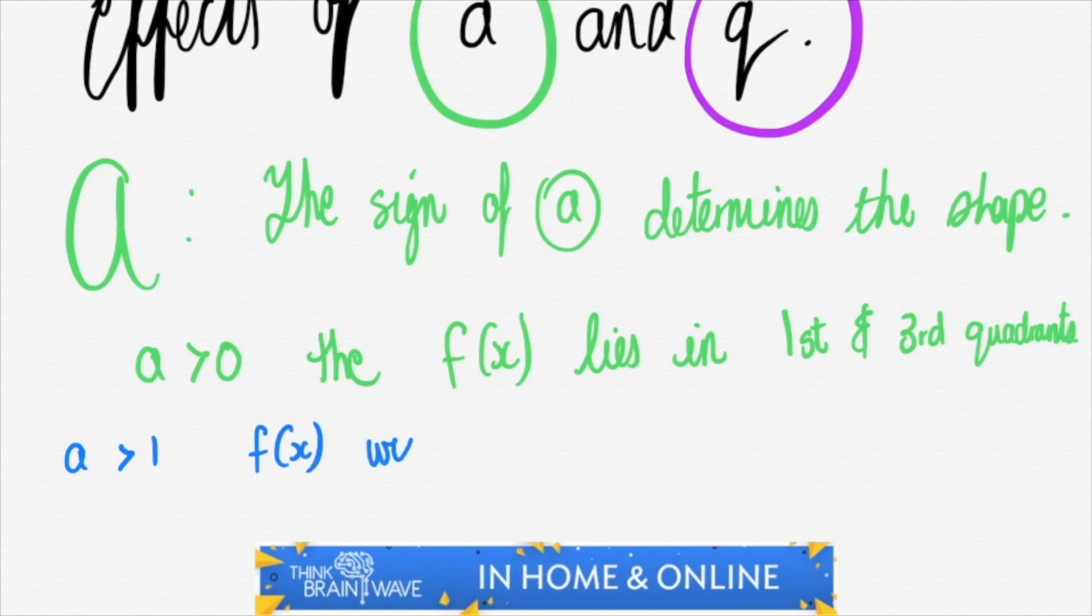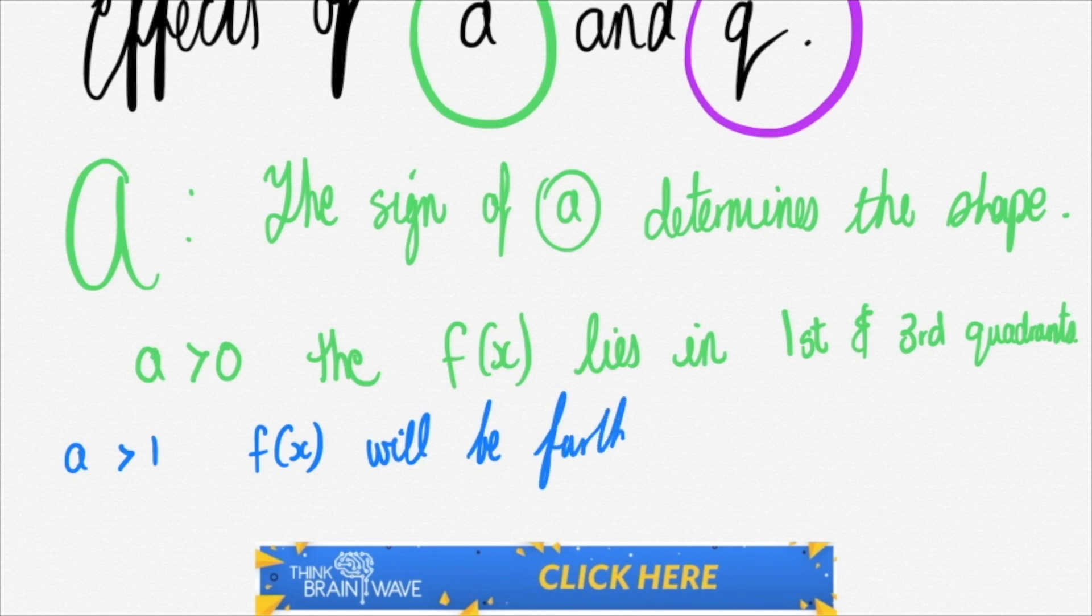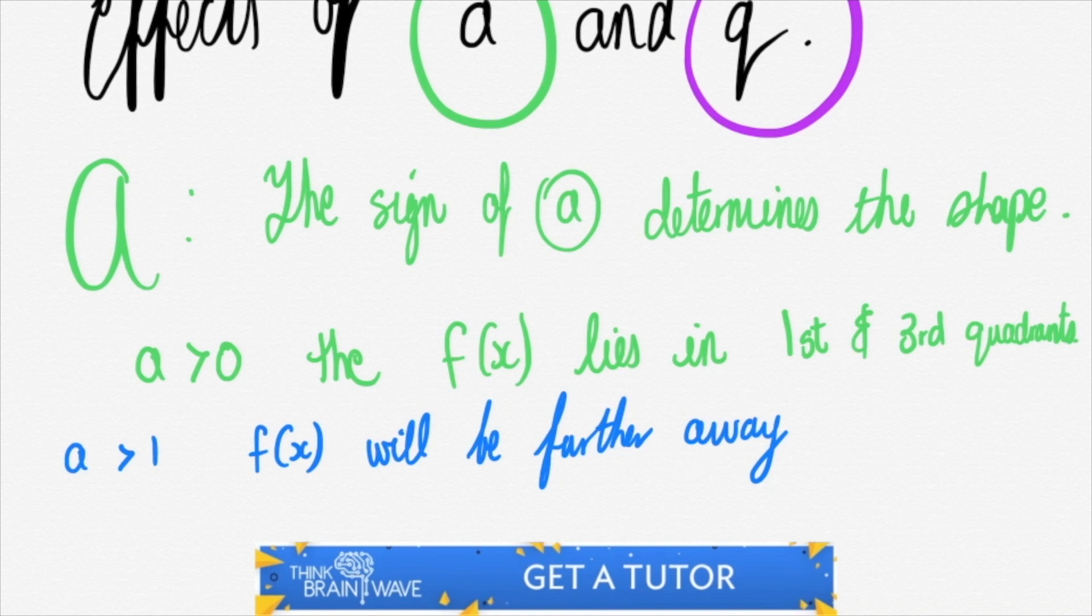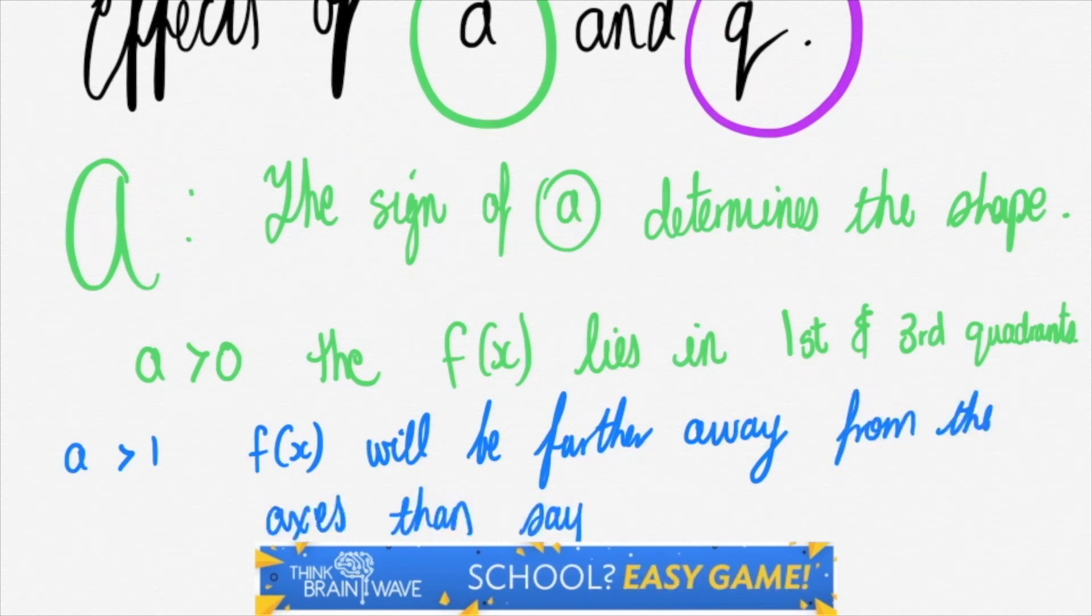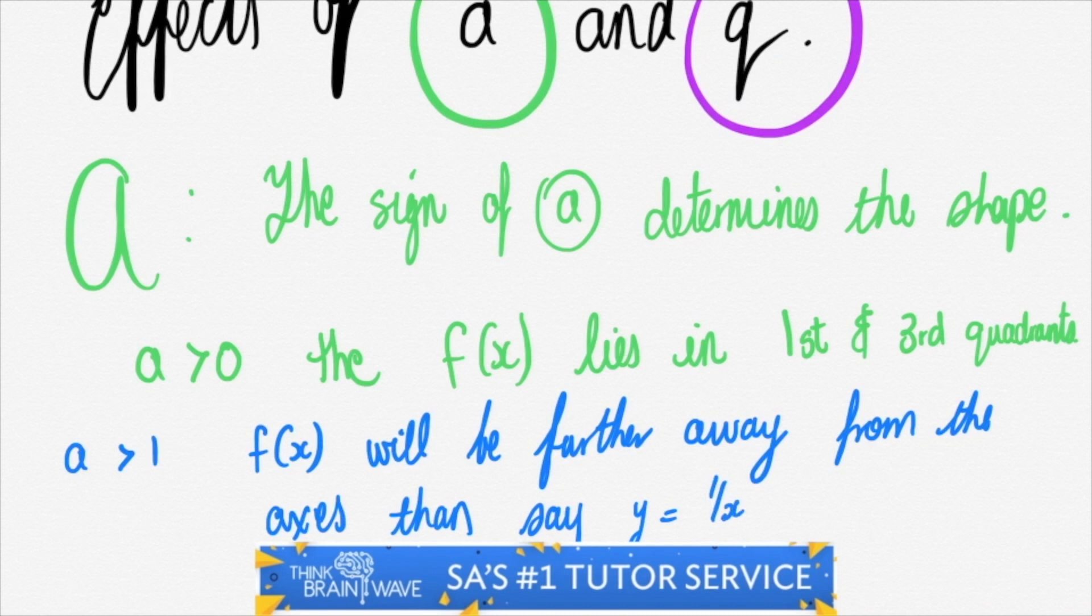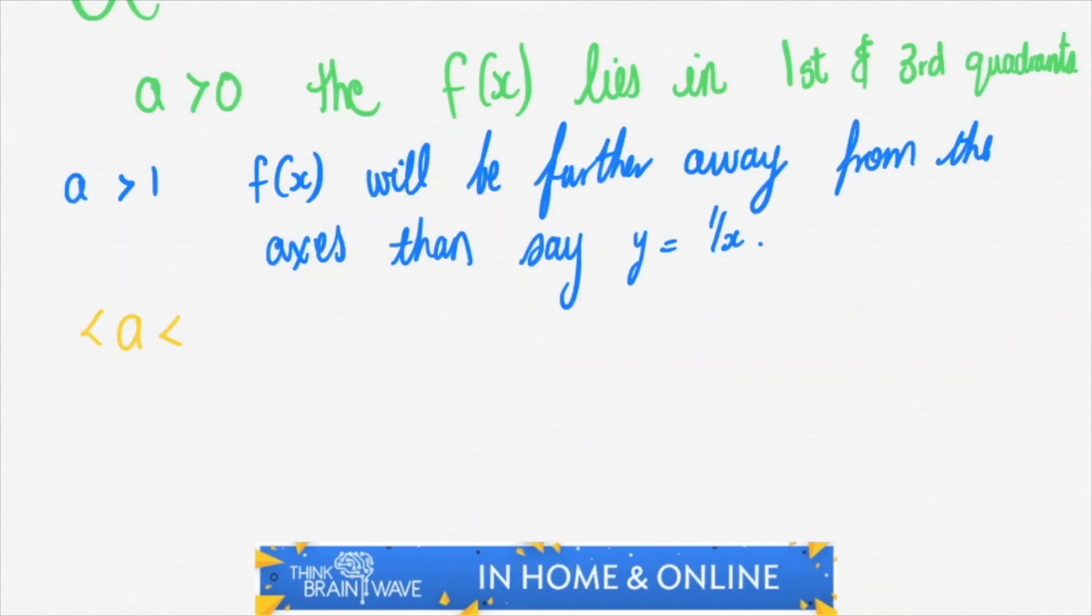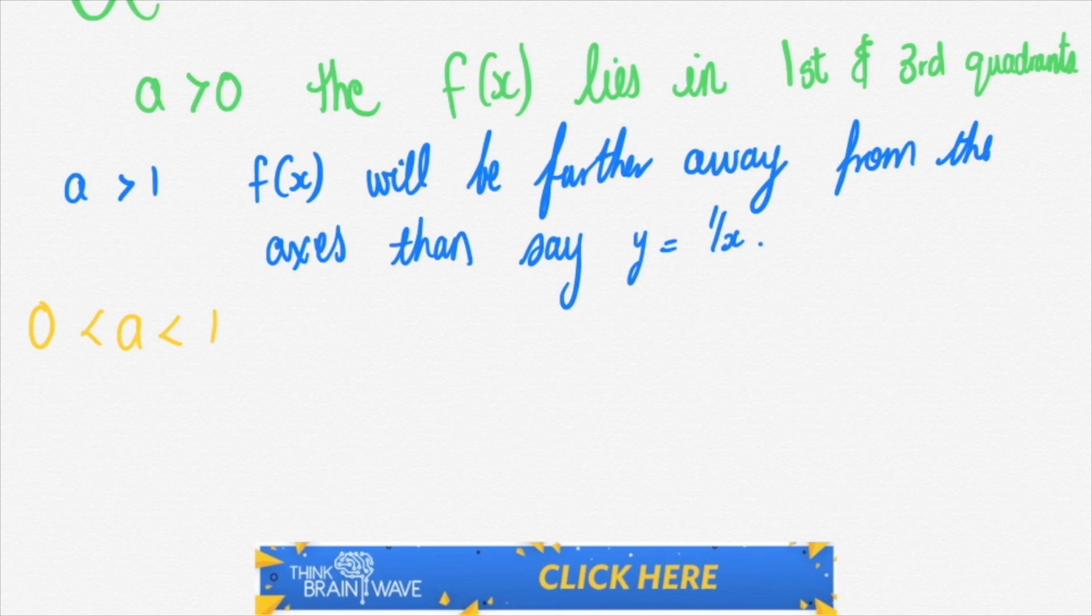So if we say a is greater than 1, we say that the function will be further away from the sets of axes than say for instance 1 over x. So if you had 2 over x, it would be further away from the axes than 1 over x.